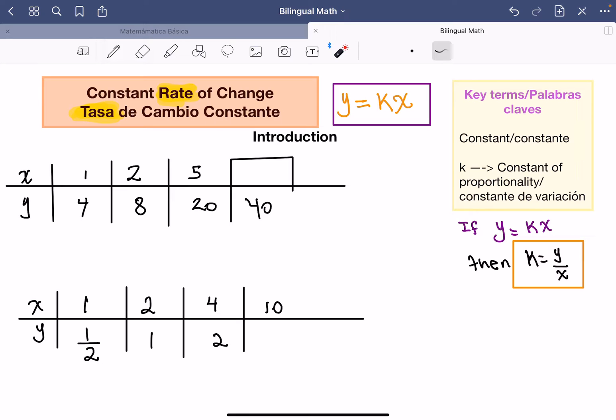Just remember that proportion means that when we have two ratios or two rates that are equivalent to one another. So I have here keyword constants and the K represents the constant of proportionality.